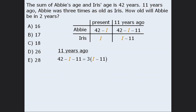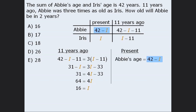We solve this equation for I: first simplify the left-hand side, then expand the right-hand side. Then we add I to both sides, add 33 to both sides, and divide both sides by four to get I equals 16. The variable I represents Iris' present age, not Abby's. The table tells us Abby's present age is 42 minus I, and since I equals 16, Abby's present age is 26. Since the question asks for Abby's age two years from now, she will be 28, so the answer is E.